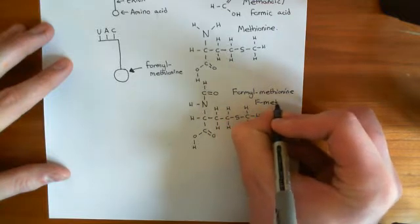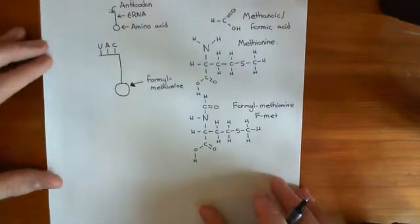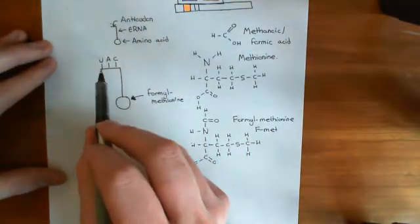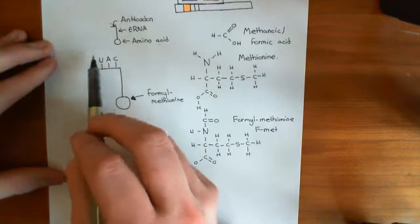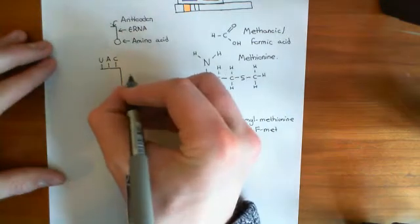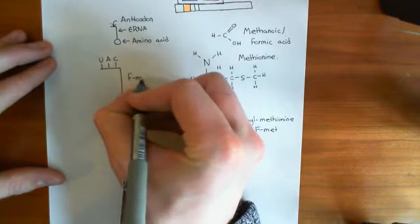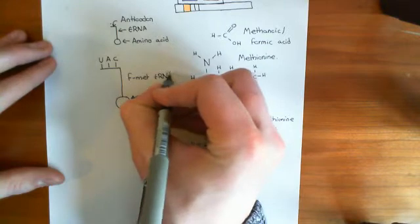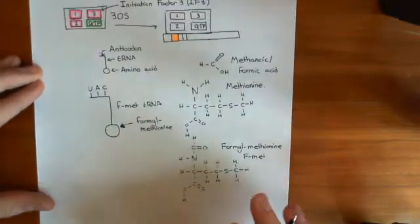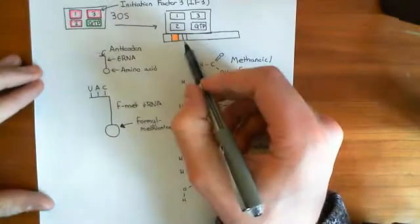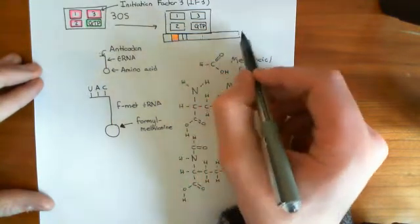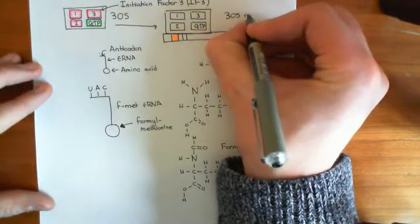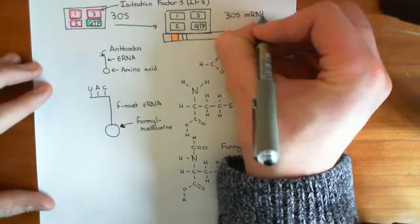When I say fMet, that means formylmethionine. Basically this tRNA, which is bound with formylmethionine and has this complementary anticodon to the start codon, we'll call this our fMet-tRNA. We bring in our fMet-tRNA and we're going to bind that to this start codon of our mRNA, which is now bound in this 30S mRNA complex. So this is a 30S mRNA complex so far.